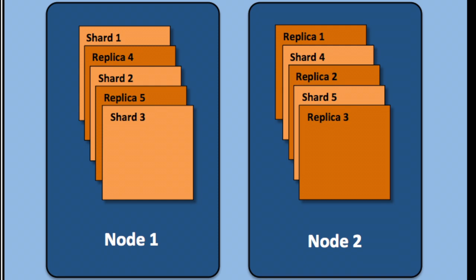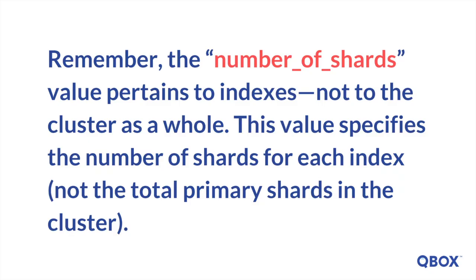In the diagram shown here, we have an Elasticsearch cluster consisting of two nodes in a default shard configuration. Elasticsearch automatically arranges the five primary shards split across the two nodes. There is one replica shard that corresponds to each primary shard, but the arrangement of these replica shards is altogether different from that of the primary shards. Remember, the number of shards value pertains to the indexes, not to the cluster as a whole. This value specifies the number of shards for each index, not the total primary shards in the cluster.